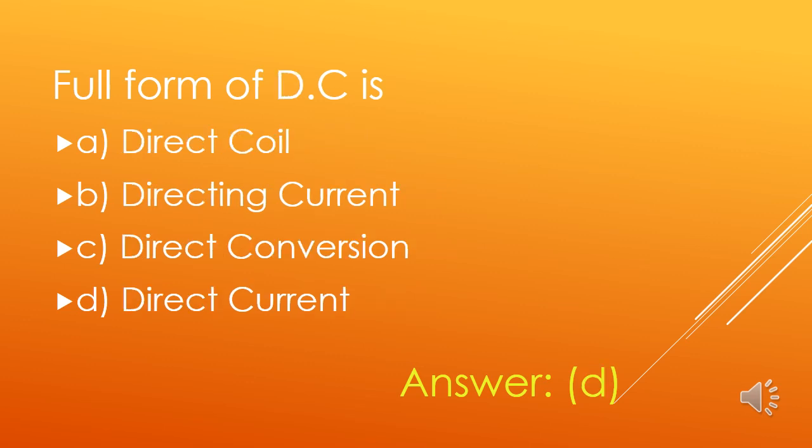Full form of DC is: A. Direct Coil, B. Directing Current, C. Direct Conversion, D. Direct Current. DC supply is not varying with time — it is always constant. The abbreviation DC stands for Direct Current. So, option D is the right answer.